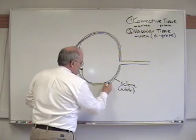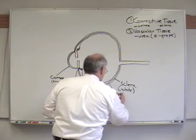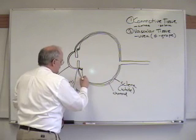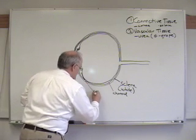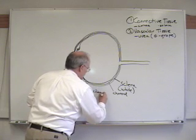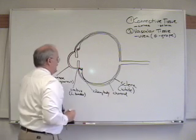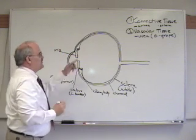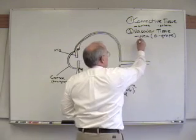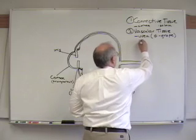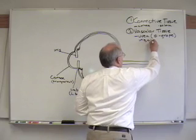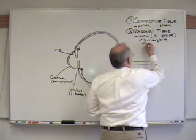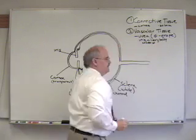One is the choroid. And that's all this area in the back. One is the ciliary body. And then in the front, it's the iris. So the three components of the uveal tract are in the front, the iris. Behind that, the ciliary body. And behind that, the choroid. Very good.